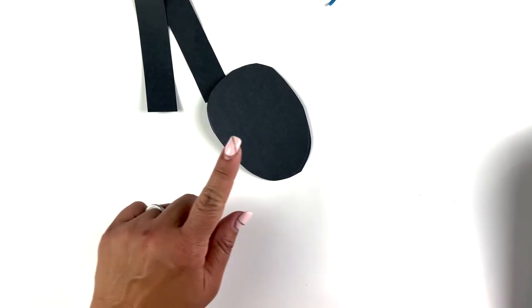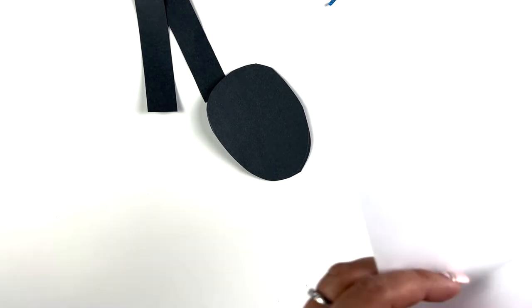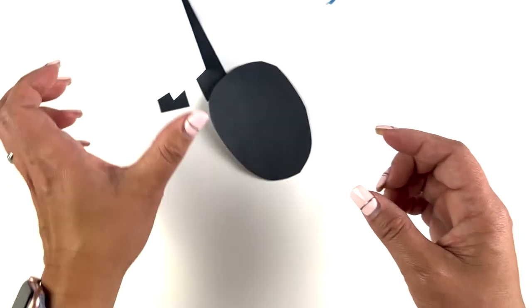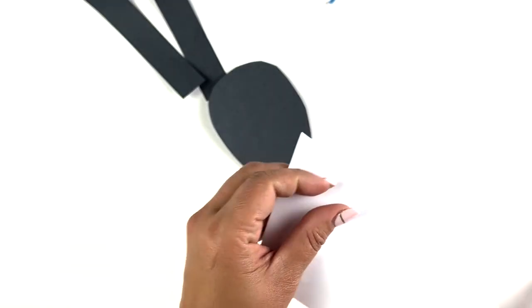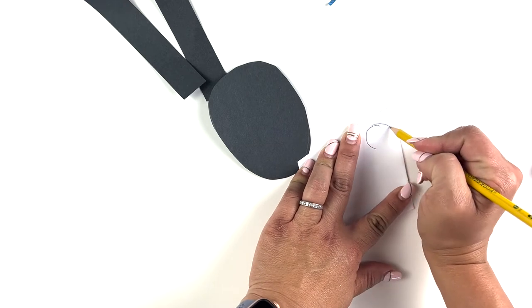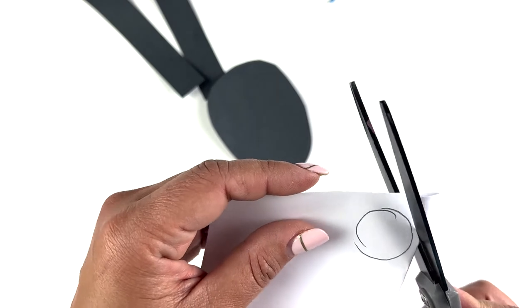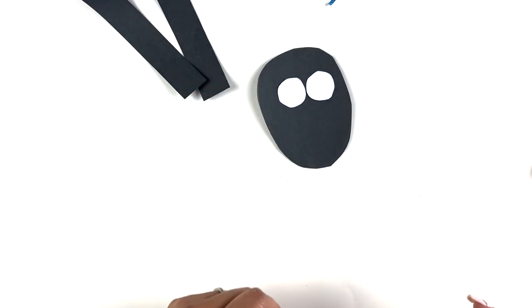And now that you have the face, we're going to take our white piece of paper. This is just scrap paper that I had. I folded it in half, and then I make a circle. So I'm going to do my eyes. I just cut this out. Now I have my two eyes.